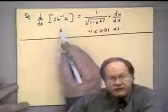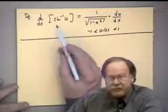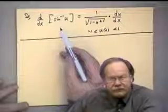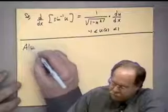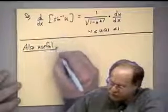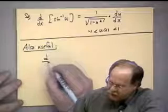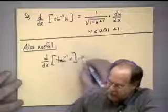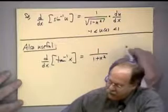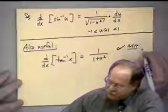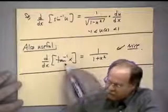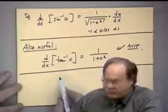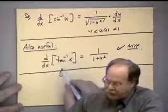There are six inverse trig functions, but most commonly used are sine inverse, cosine inverse, and tangent inverse. One more useful derivative: the derivative of tangent inverse of x equals one over one plus x squared — a very nice, clean result. The derivatives of the other inverse trig functions can be looked up as needed.